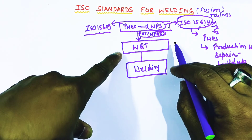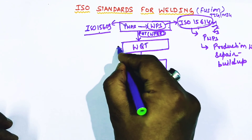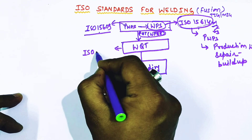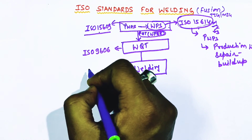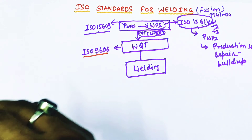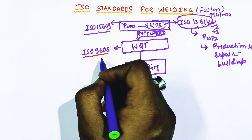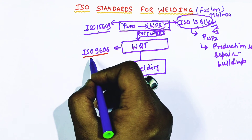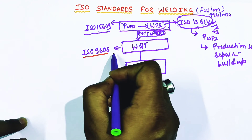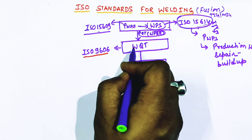For welder qualification test, the code associated is ISO 9606. The name of this code is 'Qualification test of welders — fusion welding.' ISO 9606 standards are again a series of international standards for welder qualification on different materials, like ISO 9606-2, ISO 9606-3, and so on.